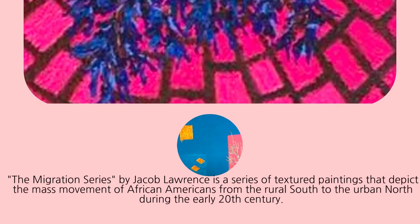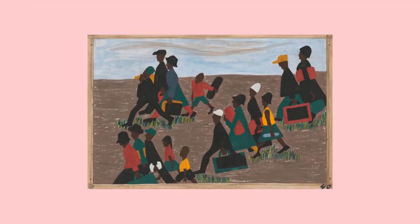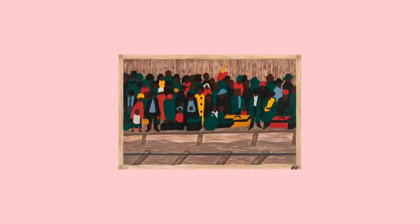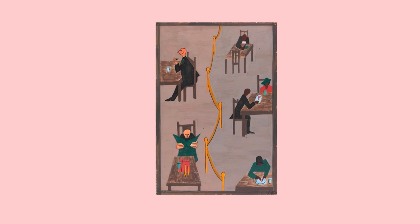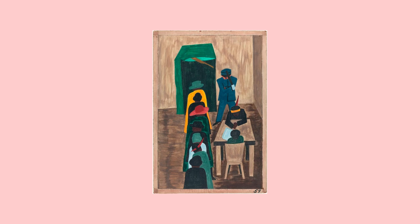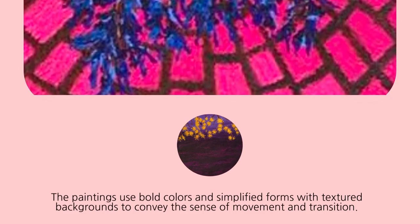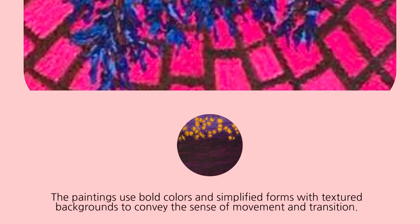The Migration Series by Jacob Lawrence is a series of textured paintings that depict the mass movement of African Americans from the rural south to the urban north during the early 20th century. The paintings use bold colors and simplified forms with textured backgrounds to convey a sense of movement and transition.